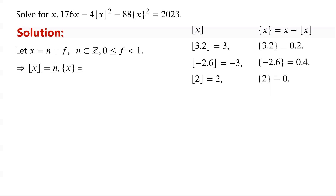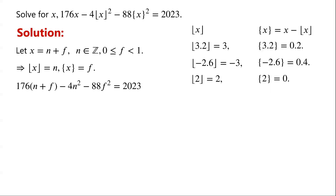Then the floor of x in the given equation is denoted by n, and the fractional part of x in the given equation is denoted by f. So the original equation can now be written as: 176 times n plus f, minus 4n squared, minus 88f squared, equals 2023.